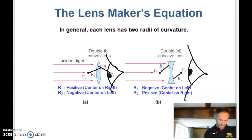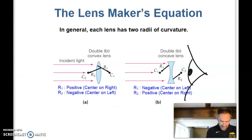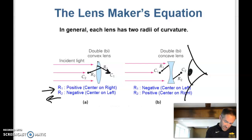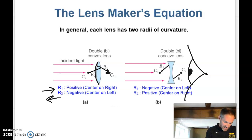What I like to do is think of it this way: from the surface to the center — I've drawn an arrow. If that arrow is going to the right, I call it positive, and if the arrow is going to the left, I call it negative. So the first surface that the light is hitting — surface one — has a center of curvature over on the right, so it's a positive surface. Then the light hits the second surface, and the second surface has a center of curvature over on the left, so it is going to be a negative surface.